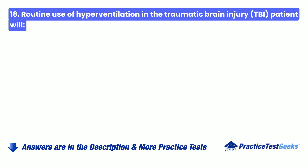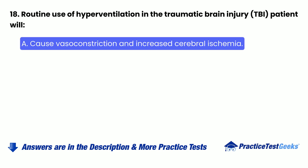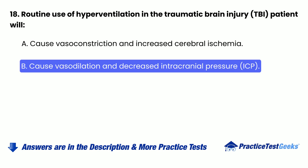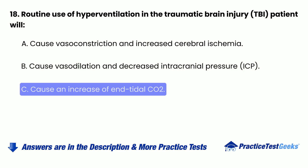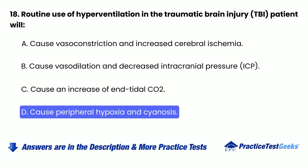Question 18: Routine use of hyperventilation in the traumatic brain injury (TBI) patient will: A. Cause vasoconstriction and increased cerebral ischemia. B. Cause vasodilation and decreased intracranial pressure (ICP). C. Cause an increase of end-tidal CO2. D. Cause peripheral hypoxia and cyanosis.